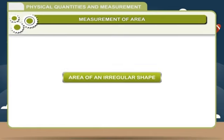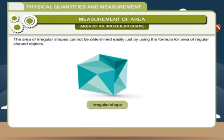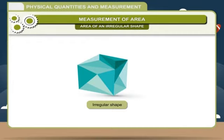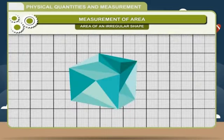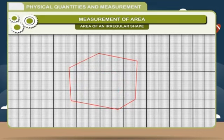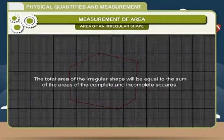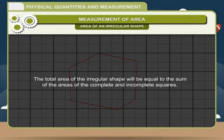Area of an irregular shape: The area of an irregular shape cannot be determined easily using the formula for a regular shaped object. The area of such shapes can be found by using graph paper. We place the object of irregular surface on the graph paper and mark its outline with a sharp pencil. Then we count the number of complete and incomplete squares. The area of an incomplete square is approximately half the area of a complete square. The total area of the irregular shape equals the sum of the areas of complete and incomplete squares.